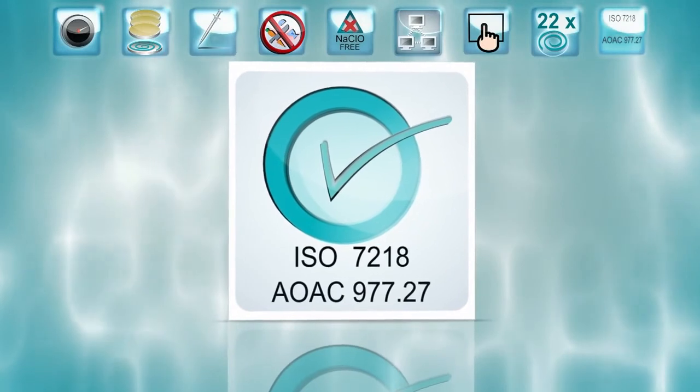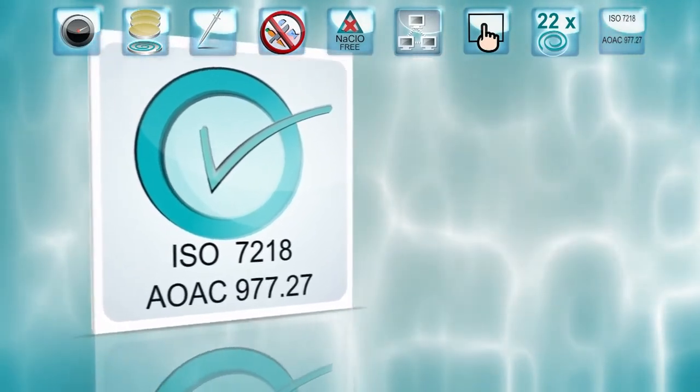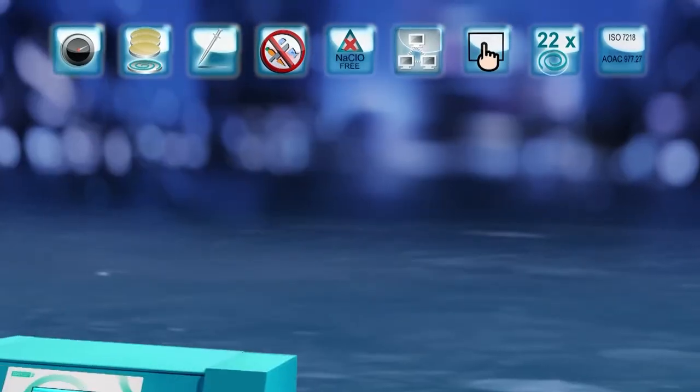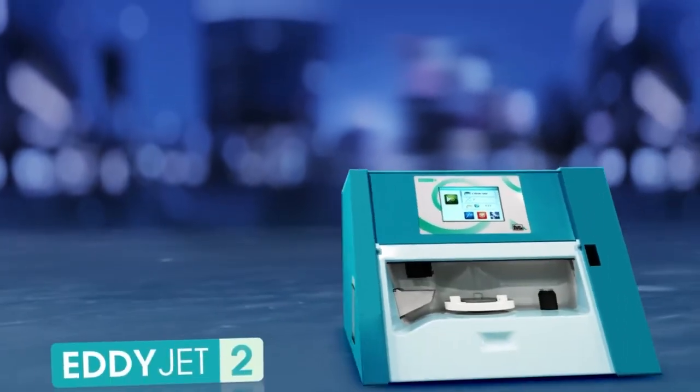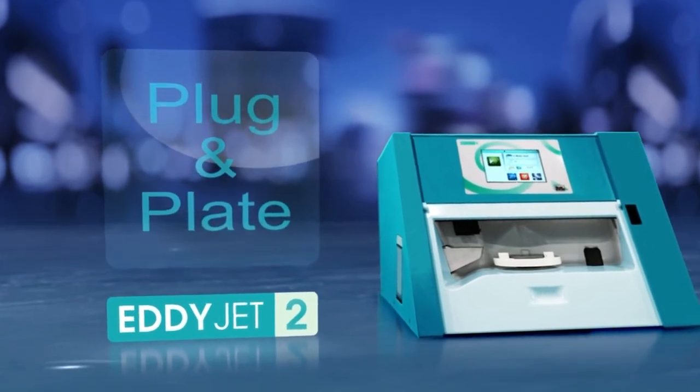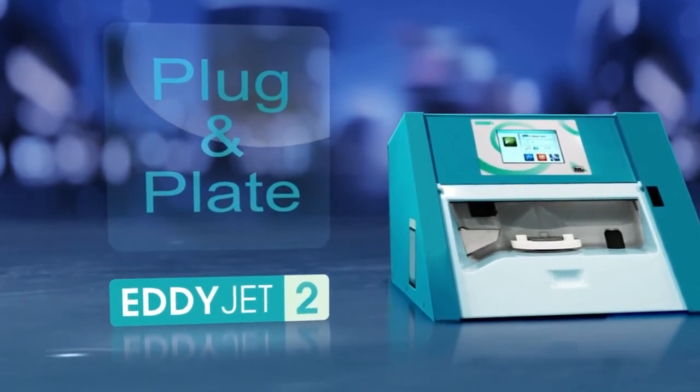Spiral plating is an ISO and AOAC validated microbiological method. A streamlined workflow, user-friendliness, and speed make EDIJED2 the most productive spiral plater.